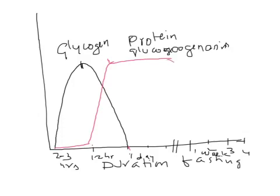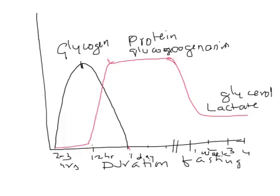After 7 days, gluconeogenesis significantly falls down. By two weeks it reaches a lower constant level. At this stage, the substrates for gluconeogenesis shift to lactate and glycerol, and this continues as long as the person is fasting or surviving.